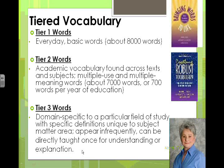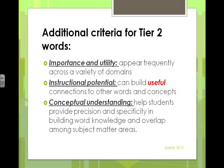Tier three words are less frequent, infrequently used words specific to a particular subject matter area. They can be taught once in context and then moved past quickly. Tier three words are domain-specific and would not appear frequently across texts. When considering tier two words, ask: how important is the word? How useful is it to the student? Does it appear frequently across a variety of subjects? What's the instructional potential — can the student use it in other subject areas, other areas of life, and build useful connections to other words and concepts?